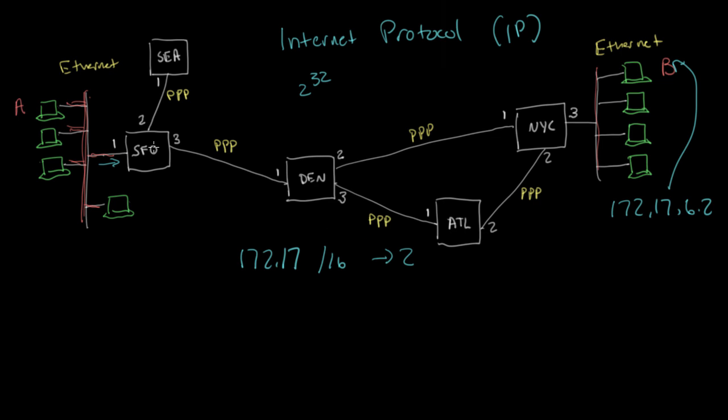And so when Denver receives a packet with the destination of this 172.17.6.2, it doesn't have to have that exact address in its forwarding table, it can just match this prefix. And so this slash notation, this /16, tells us the prefix length. So the 16 after the slash means that this route, this 172.17, matches the first 16 bits of the address.